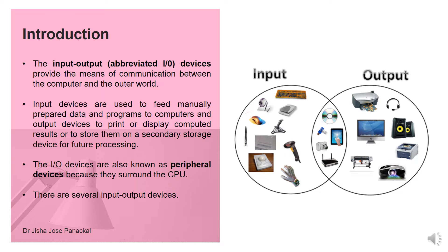All devices under each category will do the functions as discussed earlier. The IO devices are also known as peripheral devices because they surround the CPU. There are several input output devices. Here you can see a figure on the right side — many devices are shown, and some devices are used as both input and output devices, some are called input devices and some are output devices. We will discuss each and every device in the later sessions.